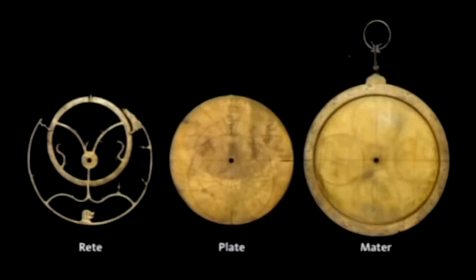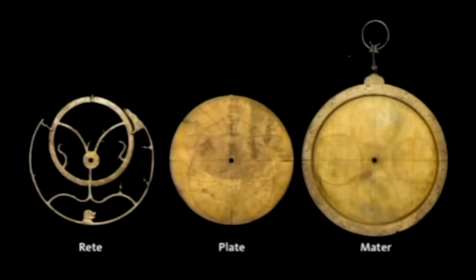The different parts of the astrolabe in this particular type: the rete corresponds to the position of the stars, the plate corresponds to a coordinate system, and the mater has some scales and puts it all together.